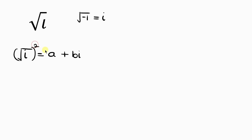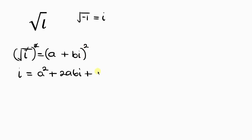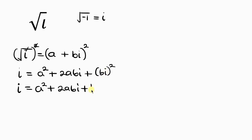Taking the square of both sides, the square cancels off the square root, leaving i equal to the expansion of (a + bi)². Expanding this gives a² plus 2abi plus bi². Now bi² — the square affects both b and i — so we have b² times i².